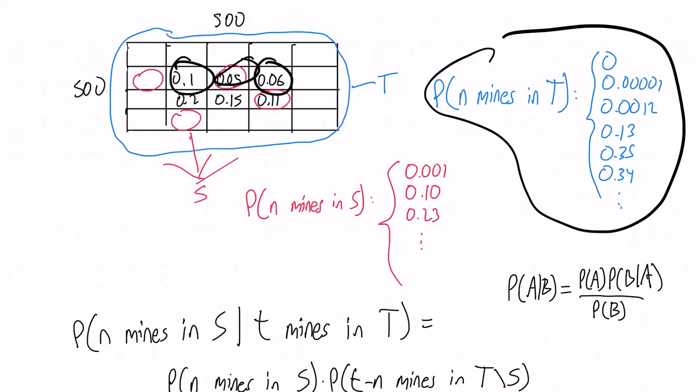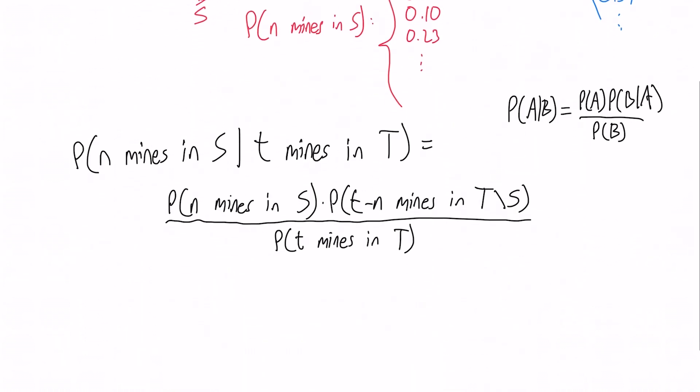Now, the question that is actually being asked is, given that we know how many mines are in T here, what is the probability of having n mines in S for each n? And an application of Bayes' rule in probability will tell us how to compute this. We need to compute two distributions.